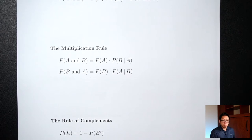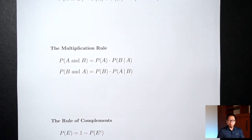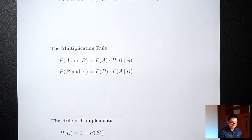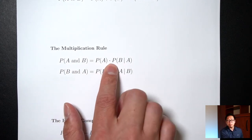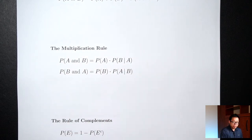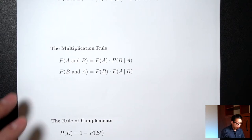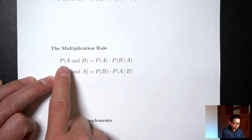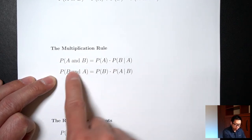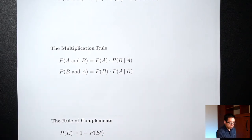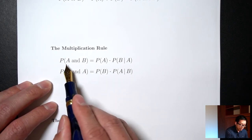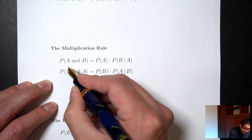The next one is called the multiplication rule, which we also talked about in the last lecture. We used it to find the probability of picking two people — one person then a second person — ending up with two fractions multiplied together. The second version of the multiplication rule is just the first one with A and B swapped. For the AND, the order doesn't matter, so A and B is the same as B and A.